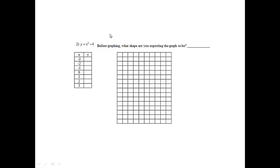Number 2, y equals x squared minus 4. And again, it says before graphing, what shape are you expecting the graph to be? I know that there's a 2 here, so this is the quadratic function family. And we learned that the quadratic function family should look like a u when we are done. So that's what should happen.